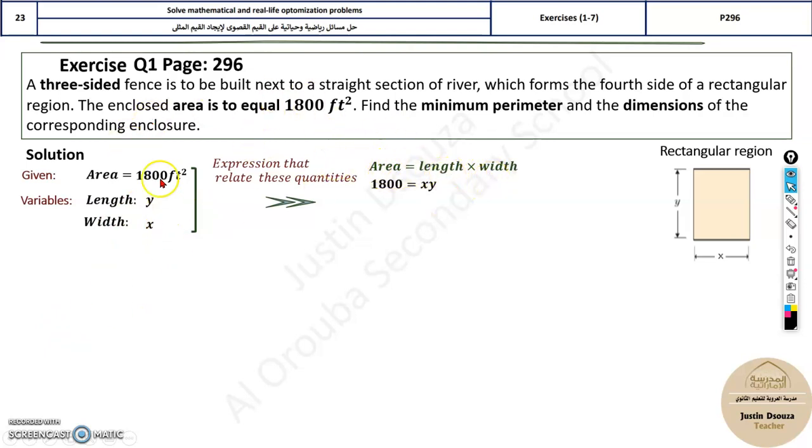First, find the area. Area is length into breadth. Area is given, 1800. Length and width is x, y. So we usually keep in terms of y, so write y is equal to, in one side, and all the other thing to the other side. This is the thing.